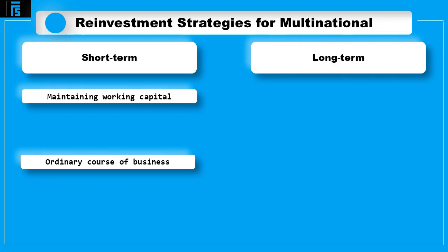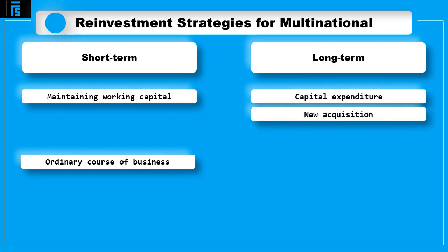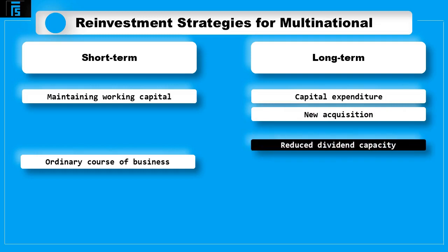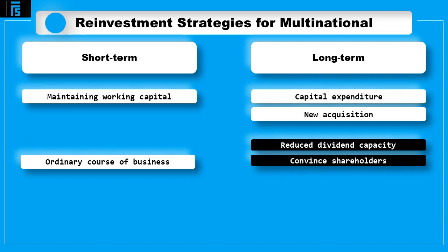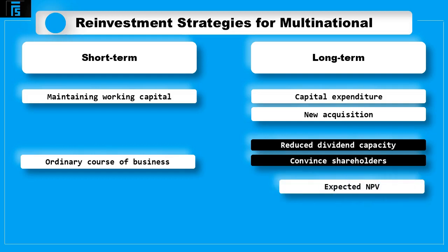On the contrary, long-term reinvestment strategy is associated with the pursuit of new investment opportunities such as capital expenditure or new acquisitions. Such reinvestments significantly reduce dividend capacity. Accordingly, before making any reinvestment decision, management must convince shareholders that the future gains from the reinvestment of profits will exceed the value of cash dividends which the shareholders will have to sacrifice. For this purpose, management typically presents shareholders with the results of an investment project appraisal, indicating the expected NPV of the project as well as forecasts of future profitability.